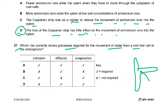Water moves into the xylem by diffusion, because xylem does not have a cell membrane. Water moves into the root hair cell by osmosis, then from cell to cell through the plasmodesmata by diffusion. Cohesion, diffusion, and evaporation — for the water to become vapor and then for water vapor to go into the atmosphere. So all three processes are involved.